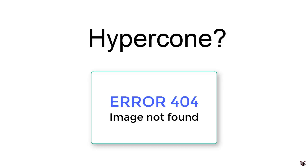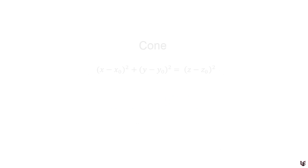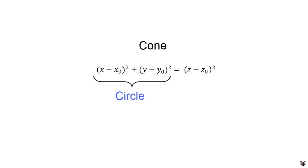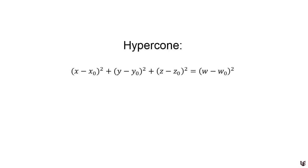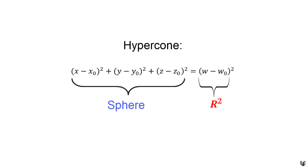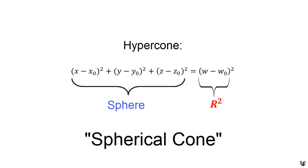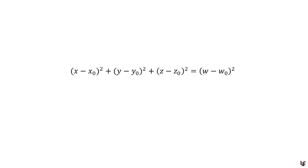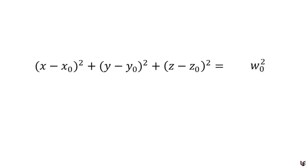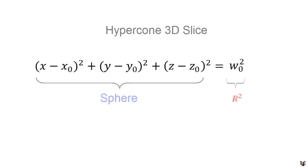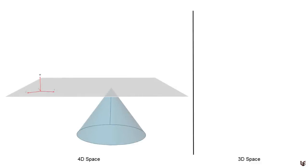What would a hypercone look like if it were to pass through our world? We can start by analyzing its algebraic formulation. By definition, the boundary of a 3D cone is formed from an extrusion of a circular base to a point in the z direction, and in 4D the hypercone is an extrusion from a spherical base to a point in the w direction — which is also why it's sometimes called the spherical cone. We will only see a slice given by the intersection with the w equals zero hyperplane, and our equation tells us that each slice is a sphere whose radius depends on the w coordinate of the hypercone.